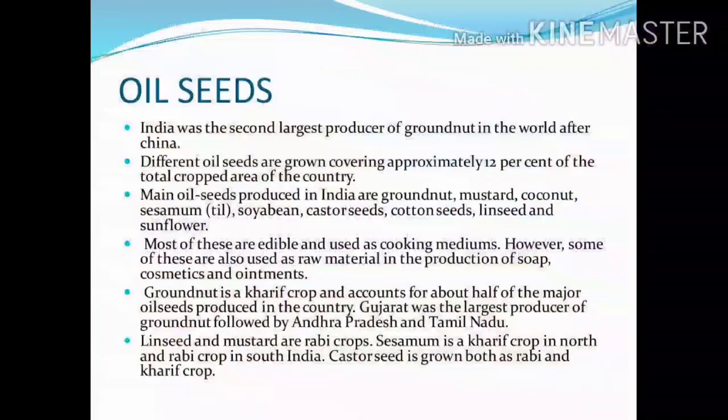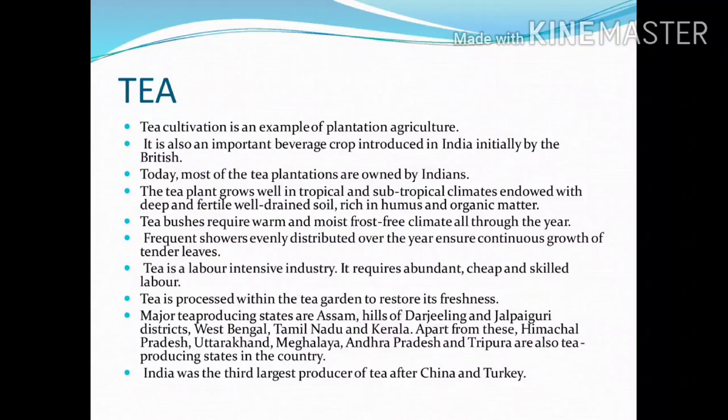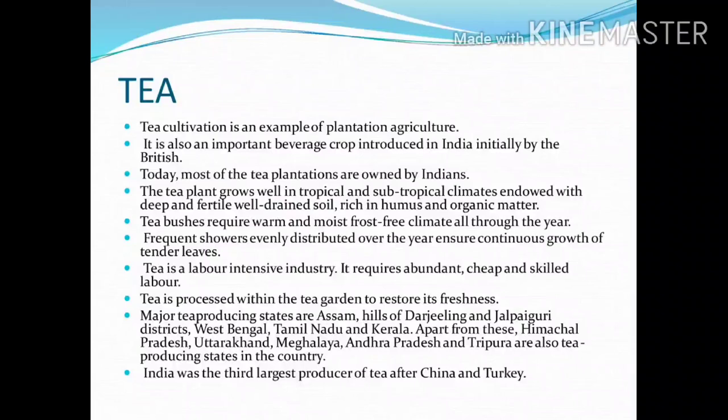Tea cultivation is an example of plantation agriculture. It is also an important beverage crop introduced in India initially by the British. Today, most of the tea plantations are owned by Indians. The tea plant grows well in tropical and subtropical climates with deep, fertile, well-drained soil rich in humus and organic matter. Frequent showers evenly distributed over the year ensure continuous growth of tender leaves.